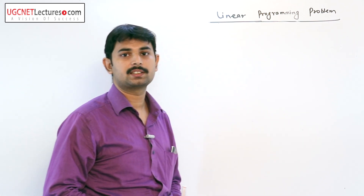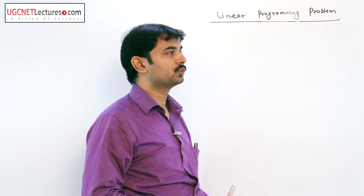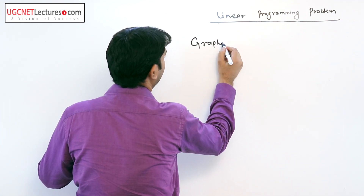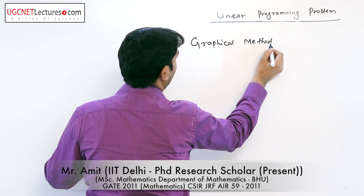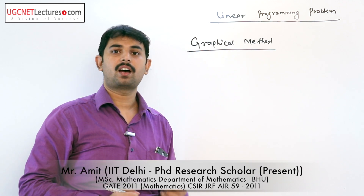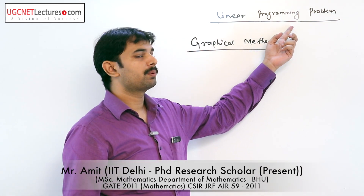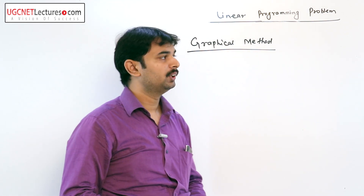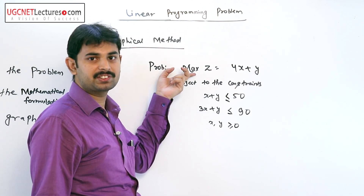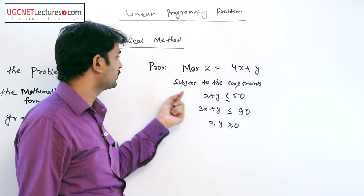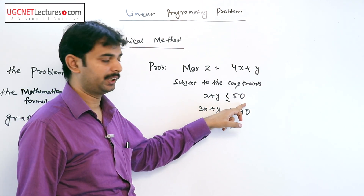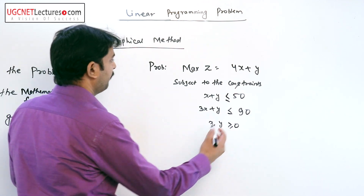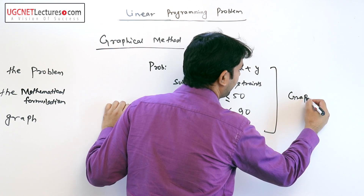We will discuss the methodology to solve linear programming problems. The first method is the graphical method. If the decision variables are two, we can solve a linear programming problem by graphical method. For example, if the problem is of maximization type: maximize z = 4x + y, subject to the constraints x + y ≤ 50 and 3x + y ≤ 90, where x and y are positive.